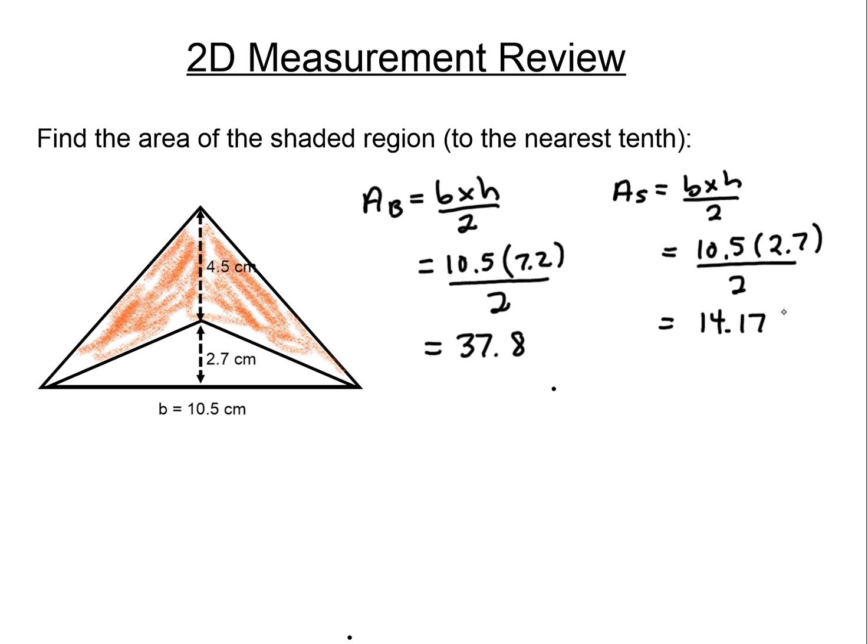And then to get the shaded, we're just going to subtract the big triangle from the small triangle. And the question said to round to the nearest tenth, and so that answer will be 23.6. And then don't forget your units and area will be squared units.